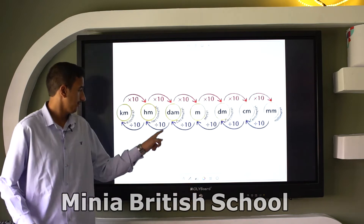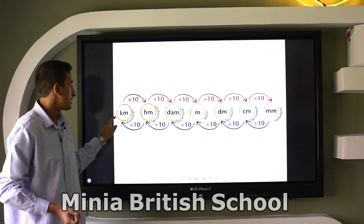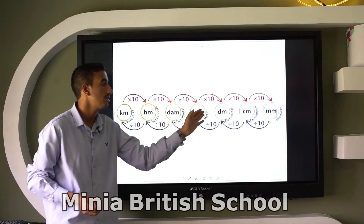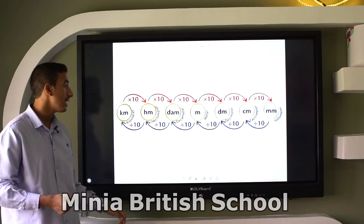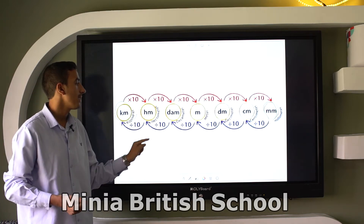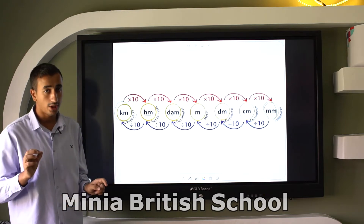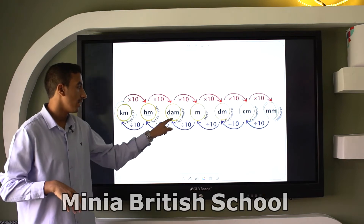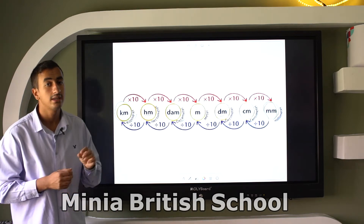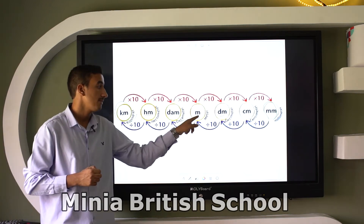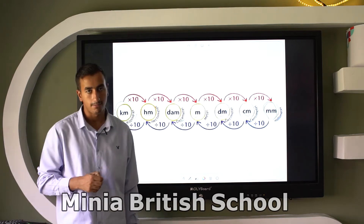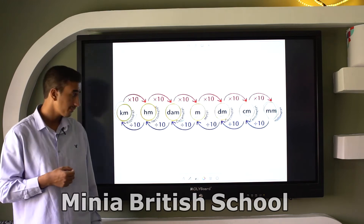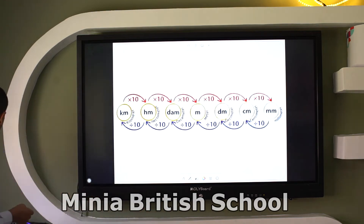The full list of metric units from biggest to smallest: kilometer, hectometer, decameter, meter, decimeter, centimeter, millimeter. Their abbreviations are: km, hm, dam, m, dm, cm, mm. Note: decameter is abbreviated 'dam' with 'da', while decimeter is just 'd'.